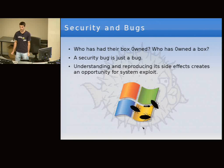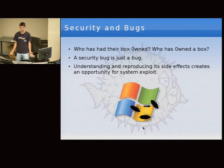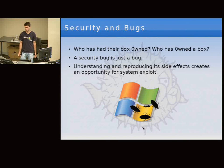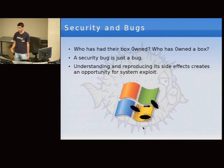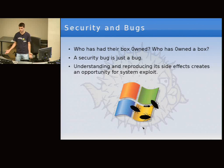A security bug is really just a bug. The only reason it becomes a security problem is that attackers understand how to leverage the side effects it creates to divert program flow to wherever they want.